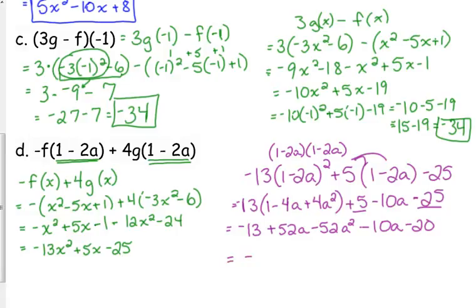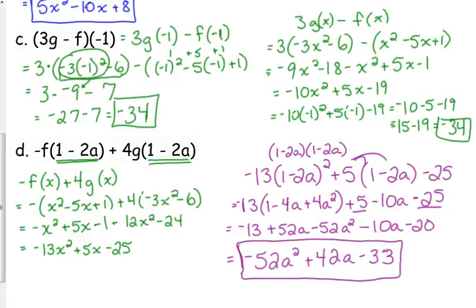And, the final step, let's put this in standard form. Negative 52A squared. 52 minus 10 is 42A. And, minus 33. So, that is the final answer. Yes, it is rather labor intensive. But, that's how you do it.